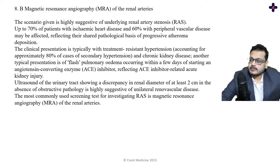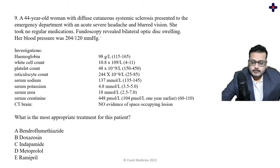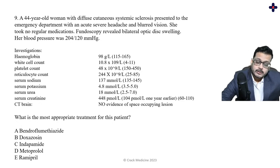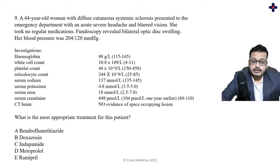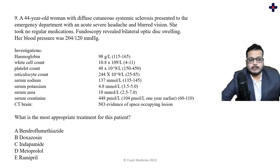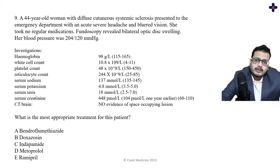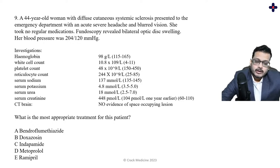CT abdomen and pelvis is a close option but should not be chosen initially because it involves radiation exposure and the need for nephrotoxic contrast. When the question asks for the initial screening modality, MRA is preferred. The first question is always: what will you do initially? That's the screening modality of choice — keep that in mind.